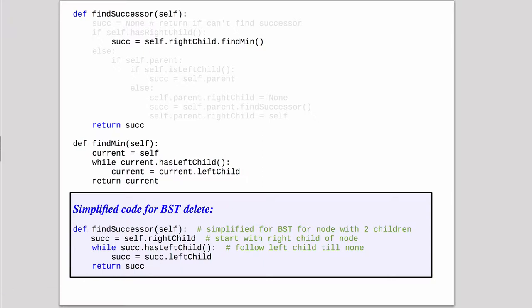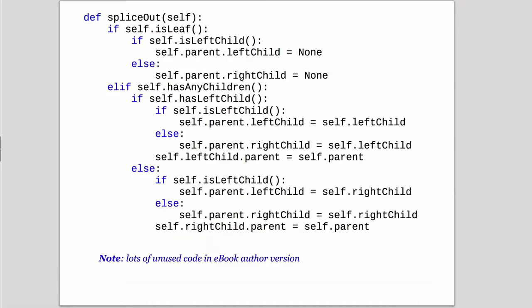Okay so now let's look at splice out. So this is the code for splice out. Now the author wrote splice out also in the general case. So this would splice out any node in a tree.